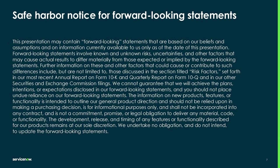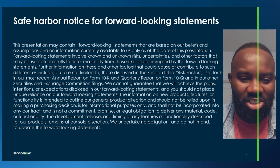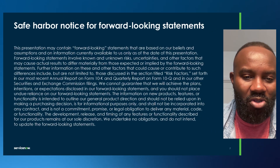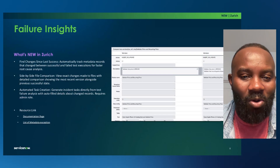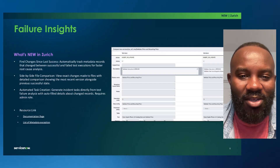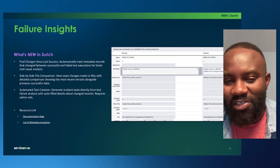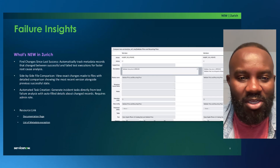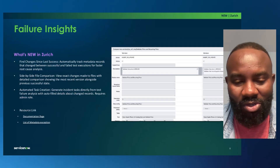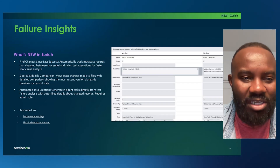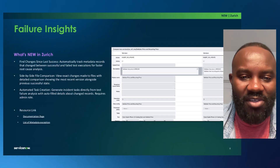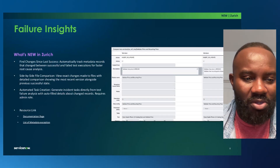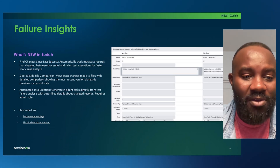We'll be talking about some things on our roadmaps, so this is a safe harbor notice — do not make any decisions based on anything future-looking we discuss. With Failure Insights, the whole idea is to help you understand changes in your test. There are times when a test runs successfully, but after metadata changes or changes from team members, re-running the test results in a failure. Failure Insights gives you insight into what's happening behind the scenes with metadata changes. It provides a side-by-side comparison, and once you've identified the changes, you can assign the fix or resolution to a team member. You can find more information on our docs page.